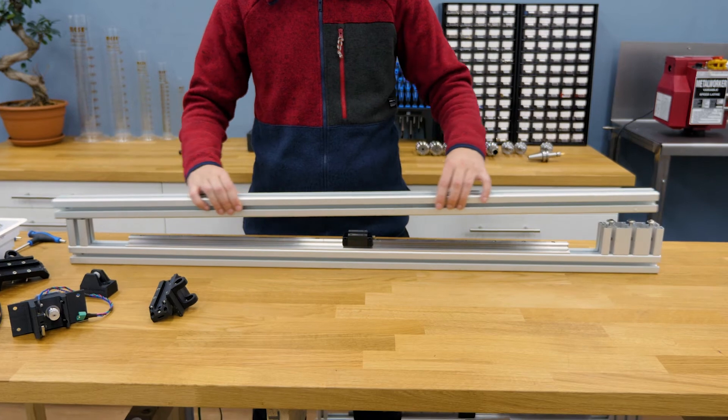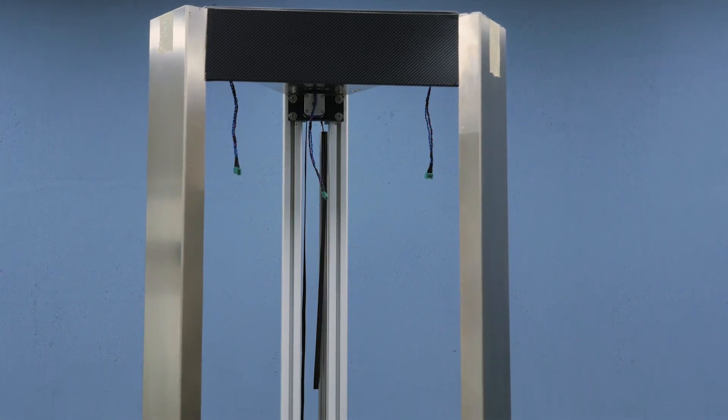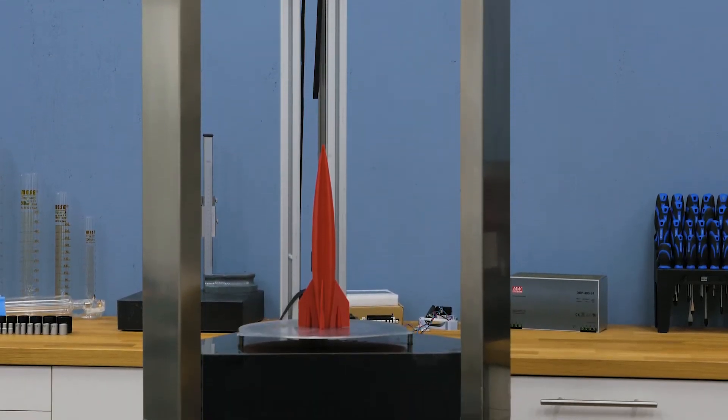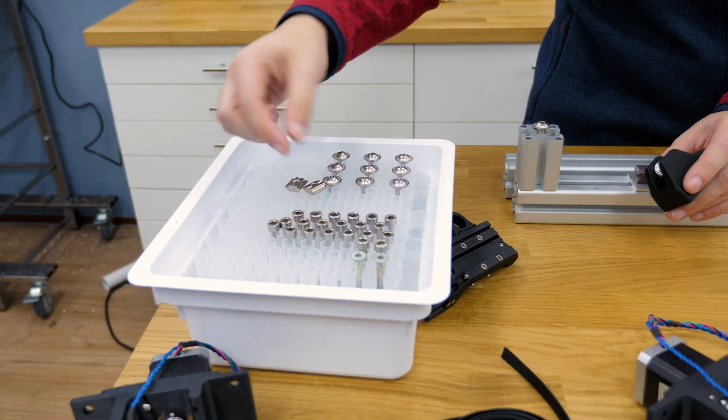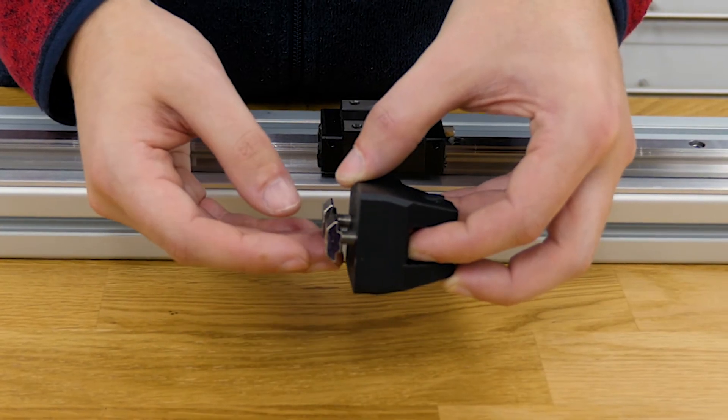With all sub-assemblies finished it is now time to assemble the linear motion modules. These three towers make up most of the 3D printer's frame. The first step here is mounting the pulley block on the bottom of the frame. I am using two M6 bolts with T-nuts in the slots for this.